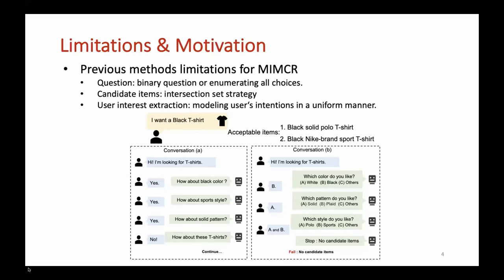Second, as shown in the conversation B, CRS can efficiently obtain user preferences by using multiple choice questions methods. However, the existing methods authorize the intersection-set strategy to select items that are associated with all accepted attribute instances, which could easily lead to the over-filtering of user preferred candidate items as the conversation progresses.